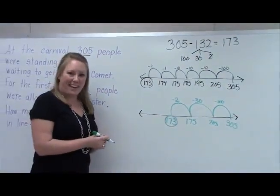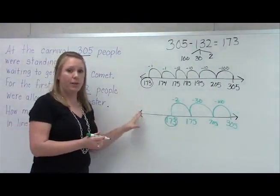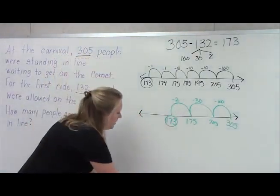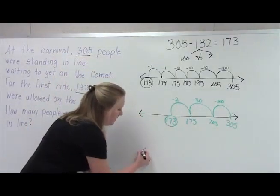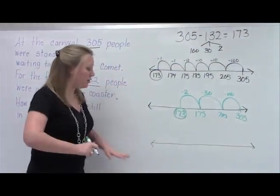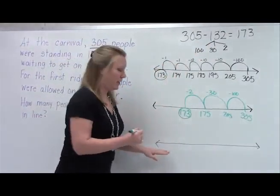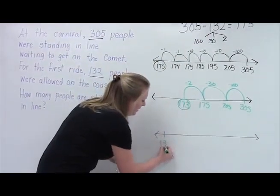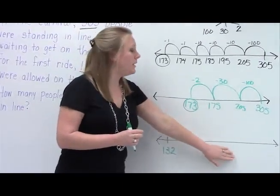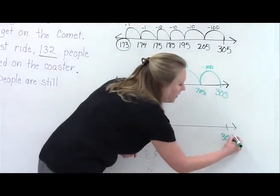There's also another way that students might use the open number line to subtract, and it's a little different than these two. It's actually counting up in order to subtract. So let's take a look at another open number line. Now this problem is different, because we're actually going to start on this side of the number line. And we're going to start with 132, and we're going to keep counting up until we get to 305. So I'm going to put on this side 305.